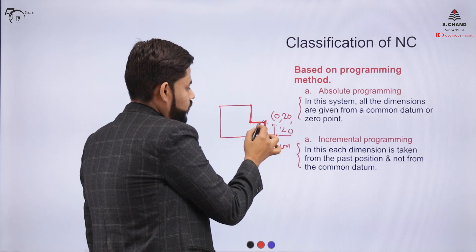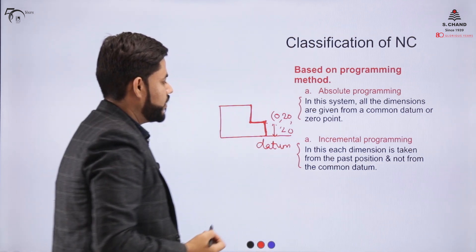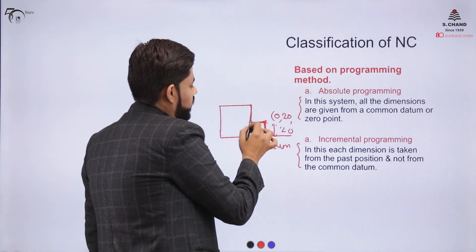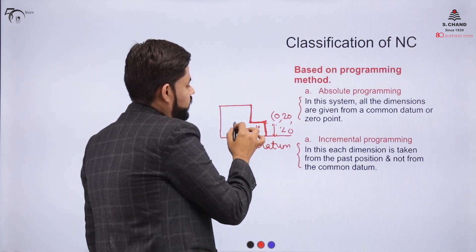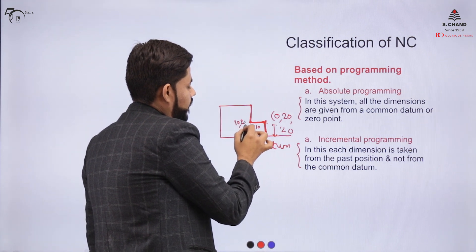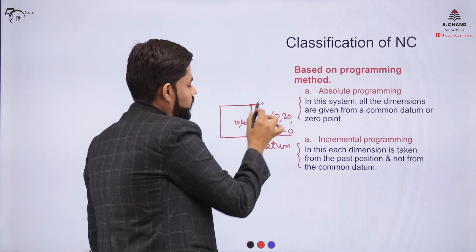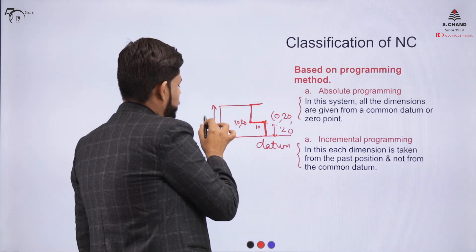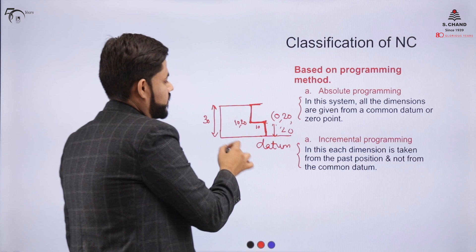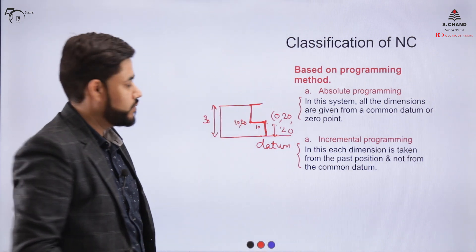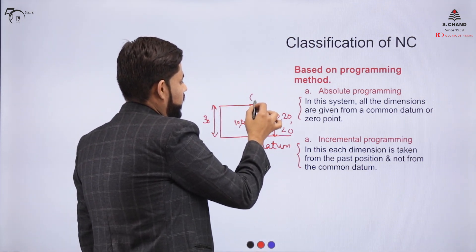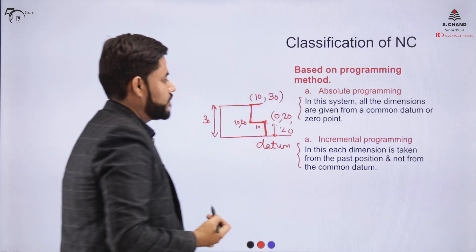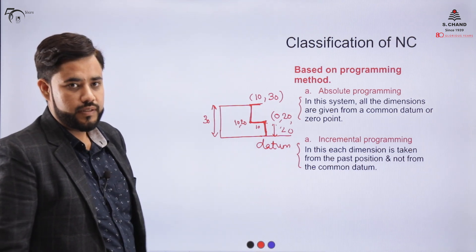Continuing with absolute programming — if the tool moves in one direction and the distance from the datum is 10, the coordinate is 10,20. For the next point, if the distance from the datum is 30, the coordinate to specify is 10,30. All distances are always calculated from the datum point.